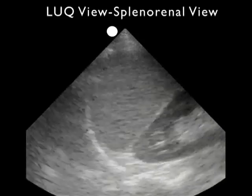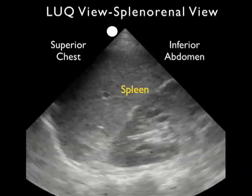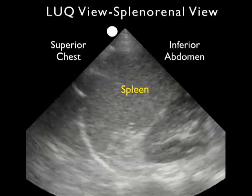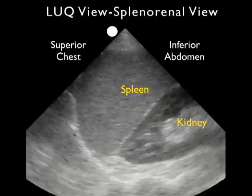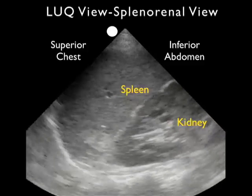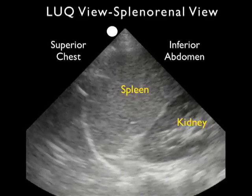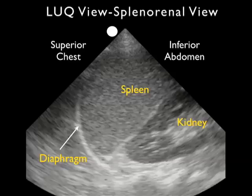Now let's take a look at a normal ultrasound image. I have the probe oriented towards the patient's head, so the superior chest cavity is towards the left and the inferior abdominal cavity towards the right. Notice the spleen, the large organ in the middle of the image, and the kidney — the football-shaped organ — seen inferior and posterior to the spleen. Notice the curving white line just above the spleen, which is the diaphragm. In the left upper quadrant, fluid will accumulate preferentially in between the spleen and the diaphragm, and will appear as a dark or anechoic stripe positioned there.